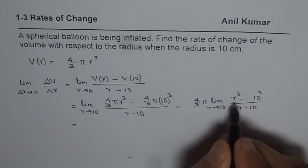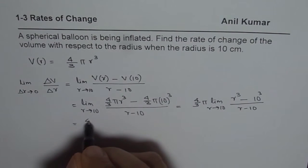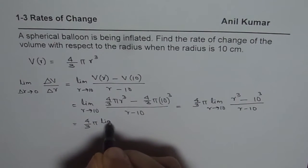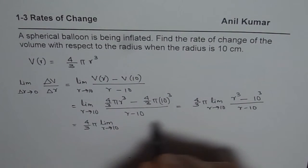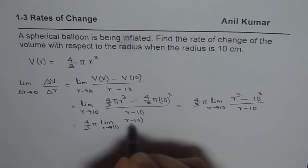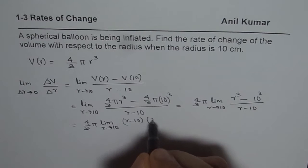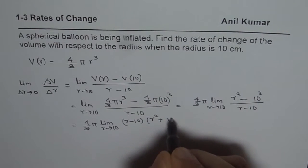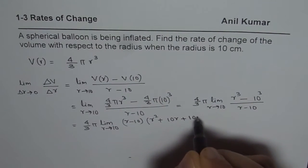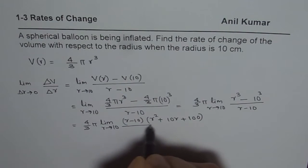Now we can factor a cube minus b cube, we can apply the factoring technique. So we get 4 by 3 pi limit r approaches 10, a minus b which is r minus 10 times a square r square plus a b which is 10 r plus 10 square, let me write 100 now, divided by r minus 10.